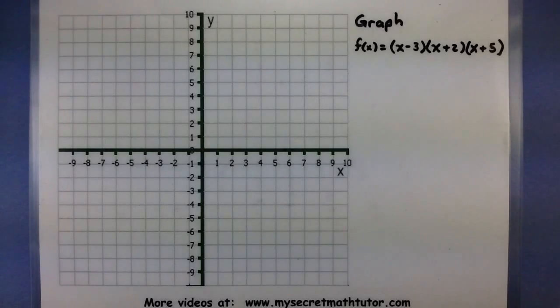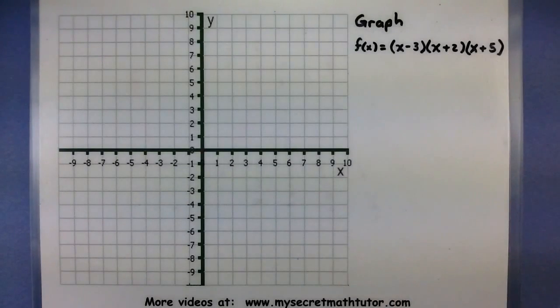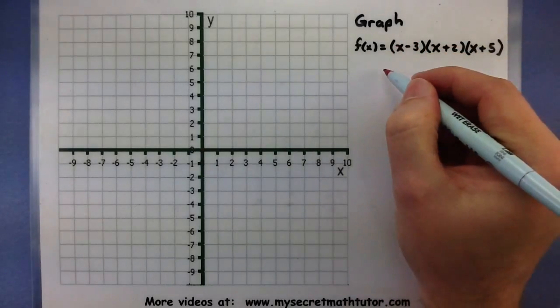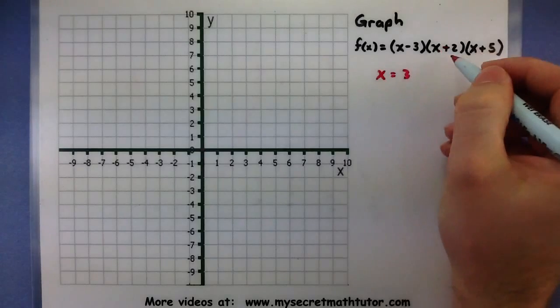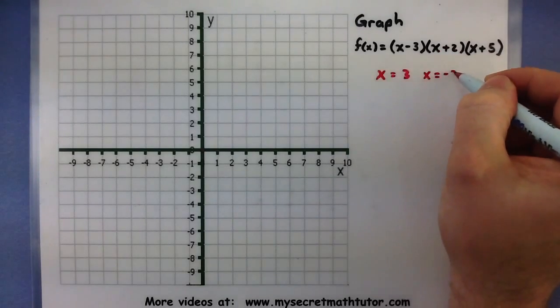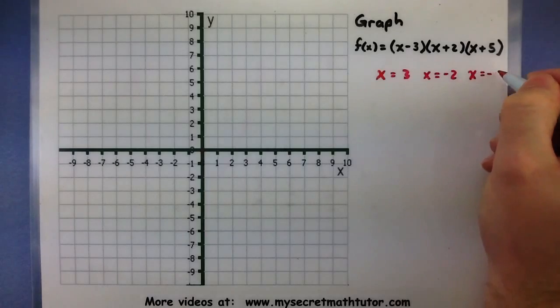So first let's mark out all of our x-intercepts. We want to think of each of these factors and where they could equal 0. So x minus 3 equals 0 when x equals 3, x plus 2 equals 0 when x equals a negative 2, and x plus 5 equals 0 when x equals a negative 5.